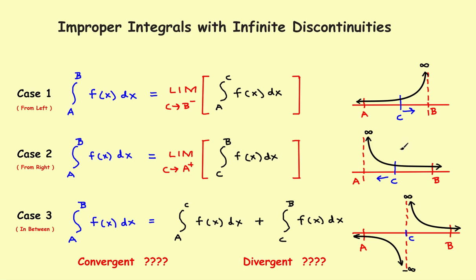How to solve the problem — a two-step process. The idea is: you want to find the integral from a to b. Come in somewhere between a and b and pick a point c. Step one: evaluate the definite integral from c to b. Step two: find the limit as c approaches a from the right, letting c slide over toward a to pick up the entire integral.